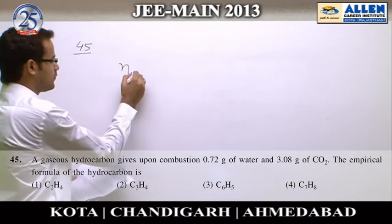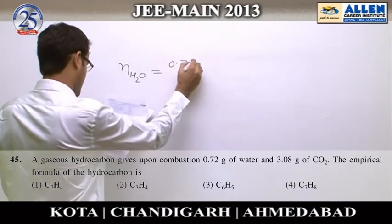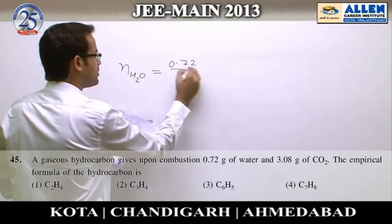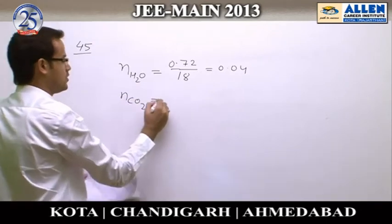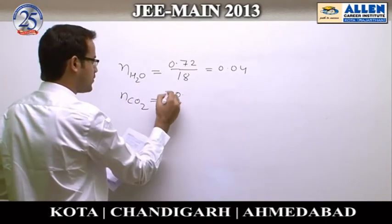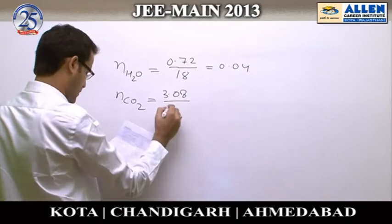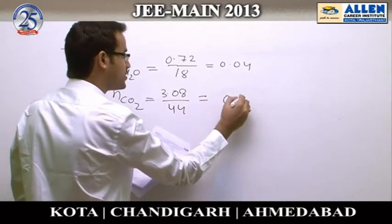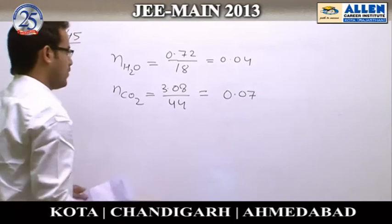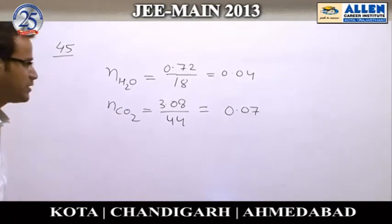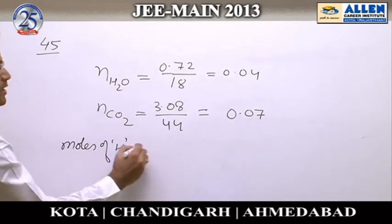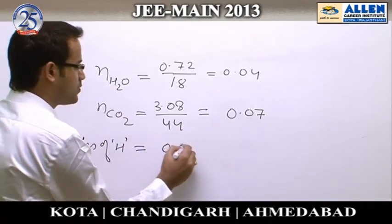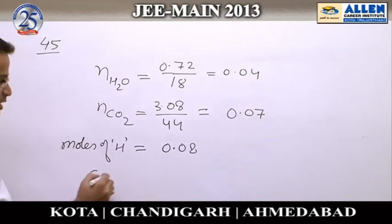Question number 45: From the given mass of water and CO2, we can calculate the moles of each. Moles of water = 0.72 / 18 = 0.04, and moles of CO2 = 3.08 / 44 = 0.07.